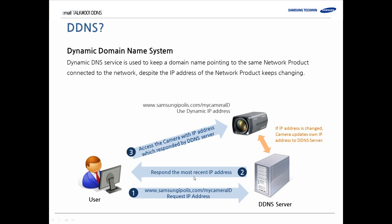DDNS is a dynamic domain name system. Suppose a user installs a Samsung network camera with an IP router, and it receives an IP address from the Internet service provider. Normally, the assigned IP address is a dynamic IP address, meaning it can be changed. DDNS updates the changed IP address to the domain name automatically.